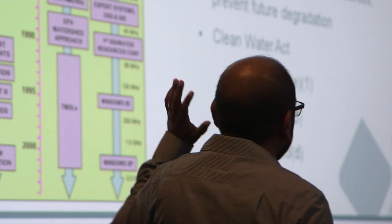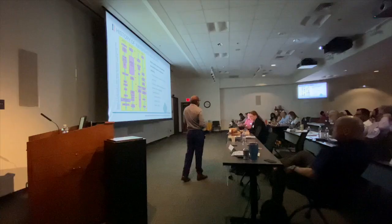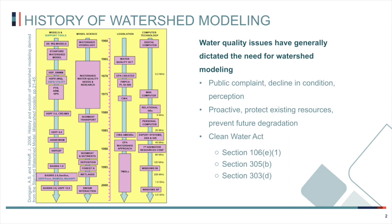A lot of the impetus for the development of watershed modeling tools generally stems from water quality issues. But the good thing is, you cannot do the water quality work if your hydrology is not good. It all starts with hydrology. All these water quality models used in watershed-based planning — TMDLs, et cetera — have a big hydrology component. They look at not just events but long-term continuous simulation.